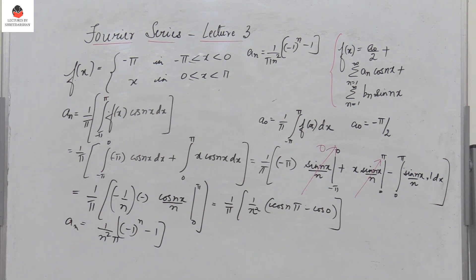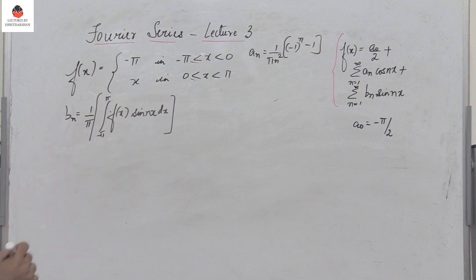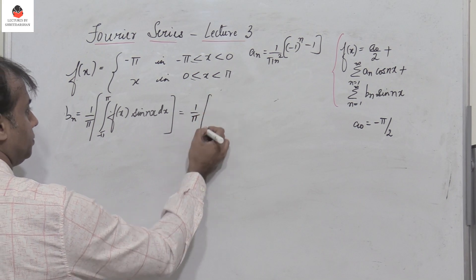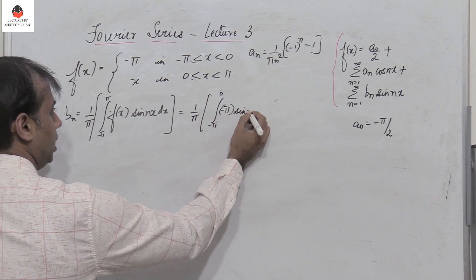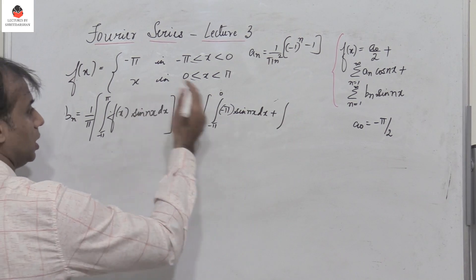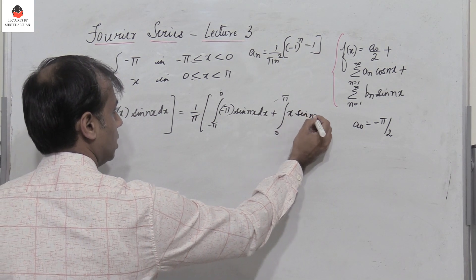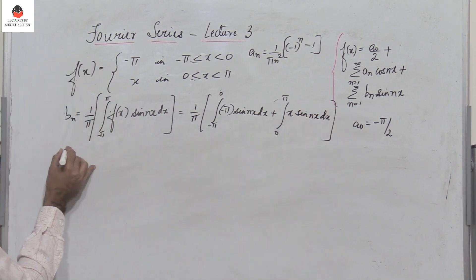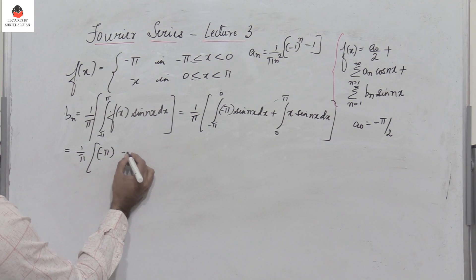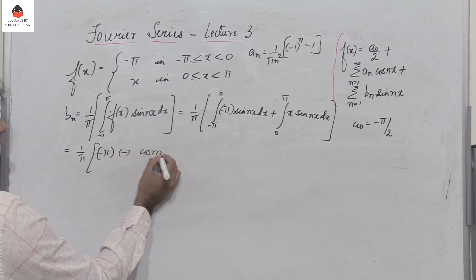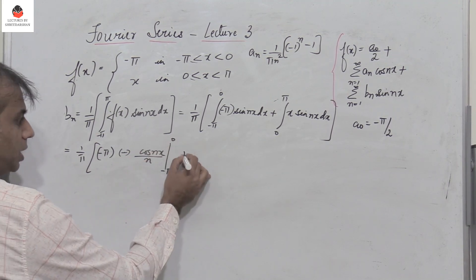Now we need to find bₙ. bₙ equals one by pi times the integral from minus pi to zero of f(x) sin(nx) dx. This is one by pi times: the integral from minus pi to zero of minus pi sin(nx) dx, plus the integral from zero to pi of x sin(nx) dx. For the first part, minus pi is taken outside and the integral of sin(nx) is minus cos(nx)/n, evaluated from minus pi to zero.